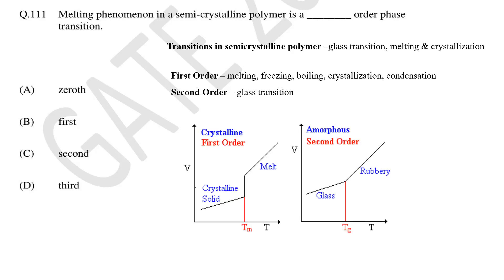First order transitions are any change brought by heat which leads to change in phase like melting, freezing, boiling, crystallization and condensation. The phase change also leads to abrupt volume change. Whereas in second order transition there is no or little heat transfer and abrupt change in volume but heat capacity does change. For example glass transition temperature. So the correct answer is B, melting is a first order transition.